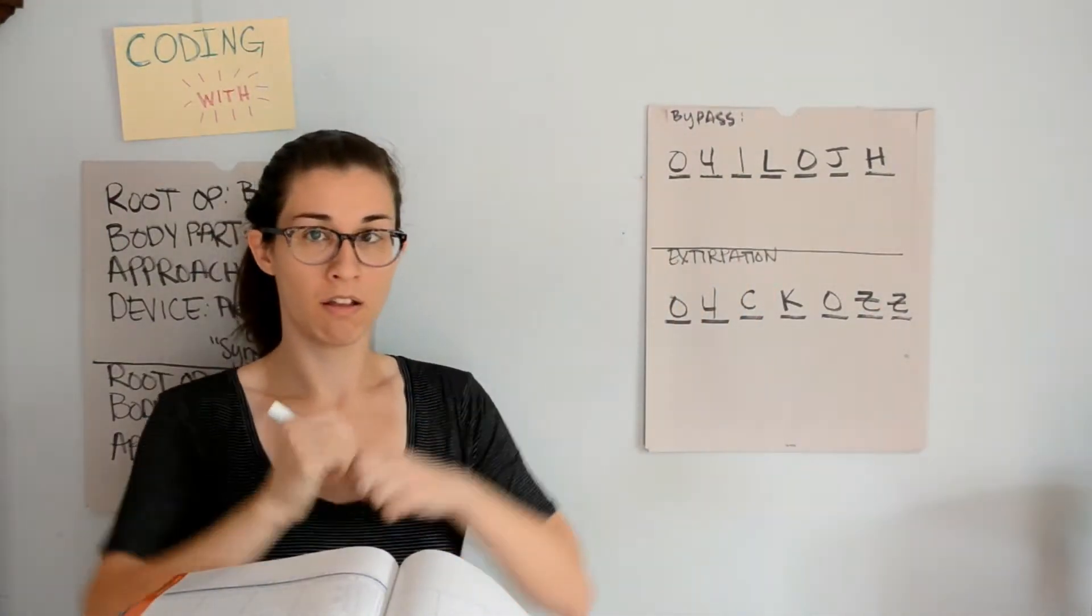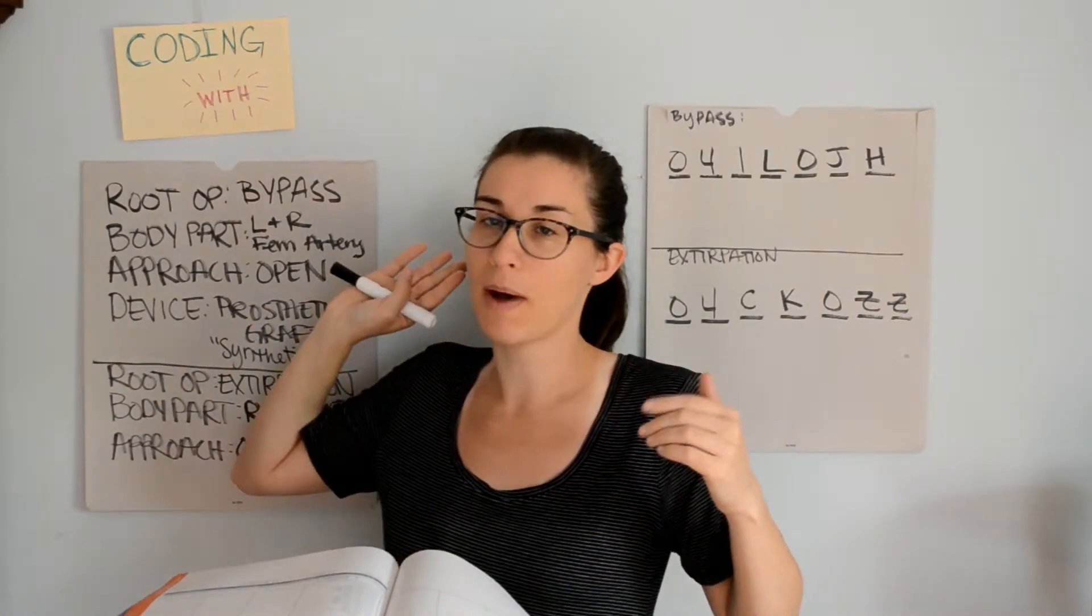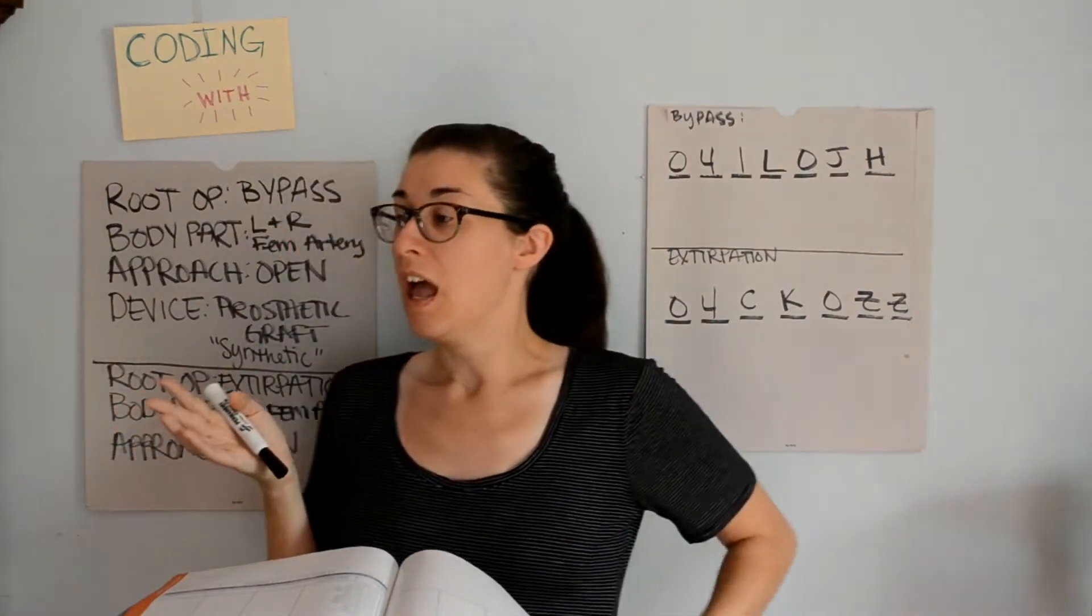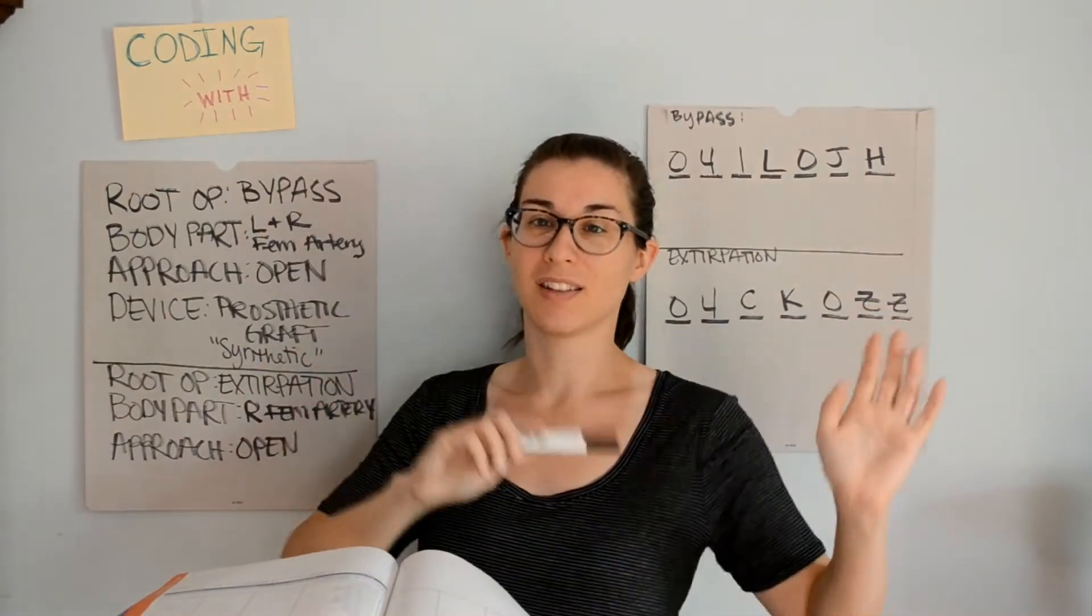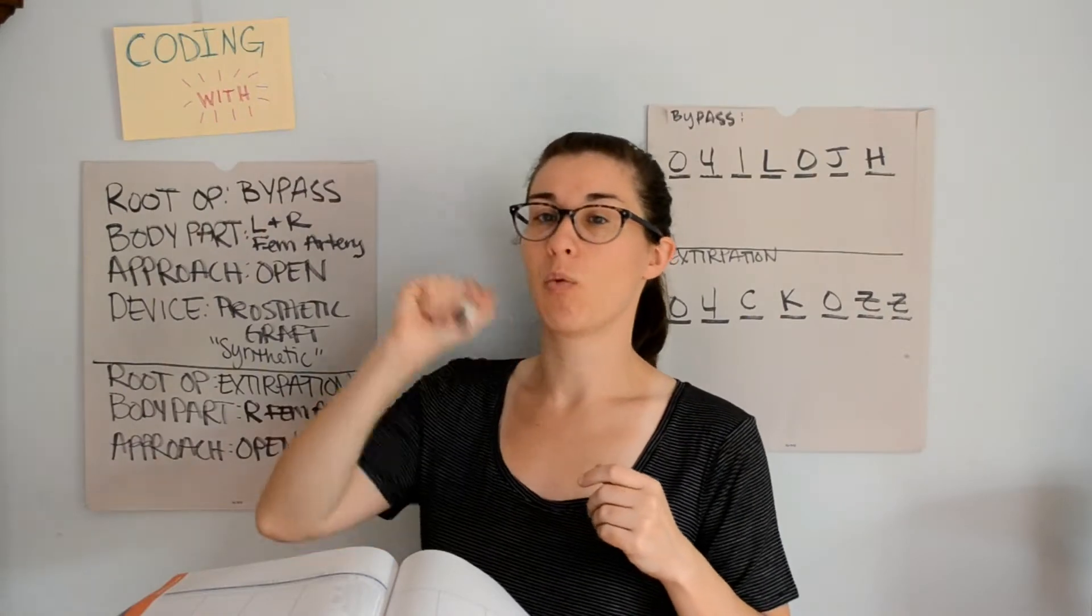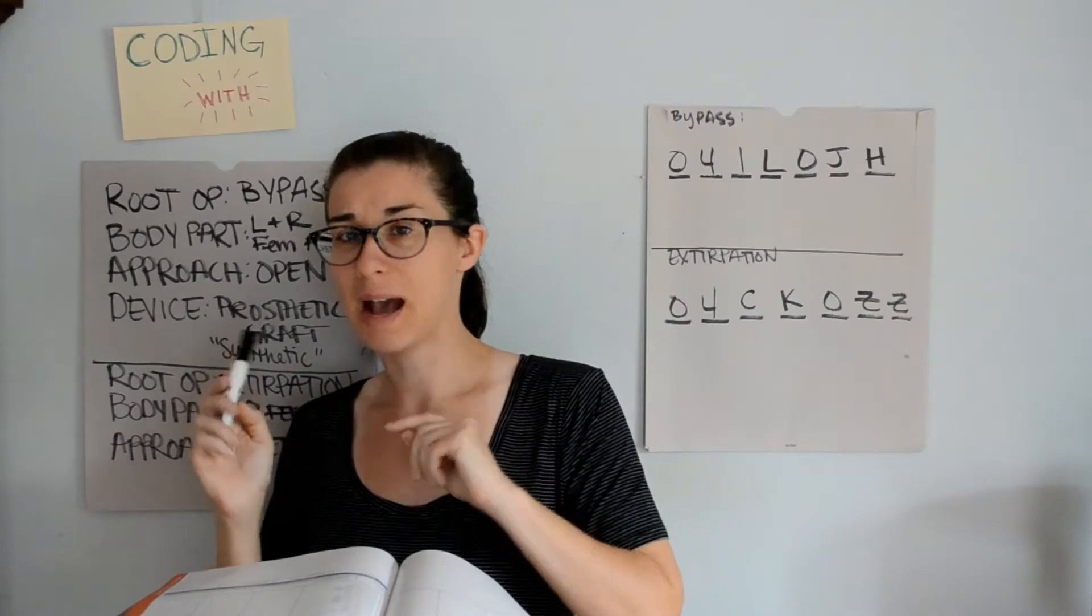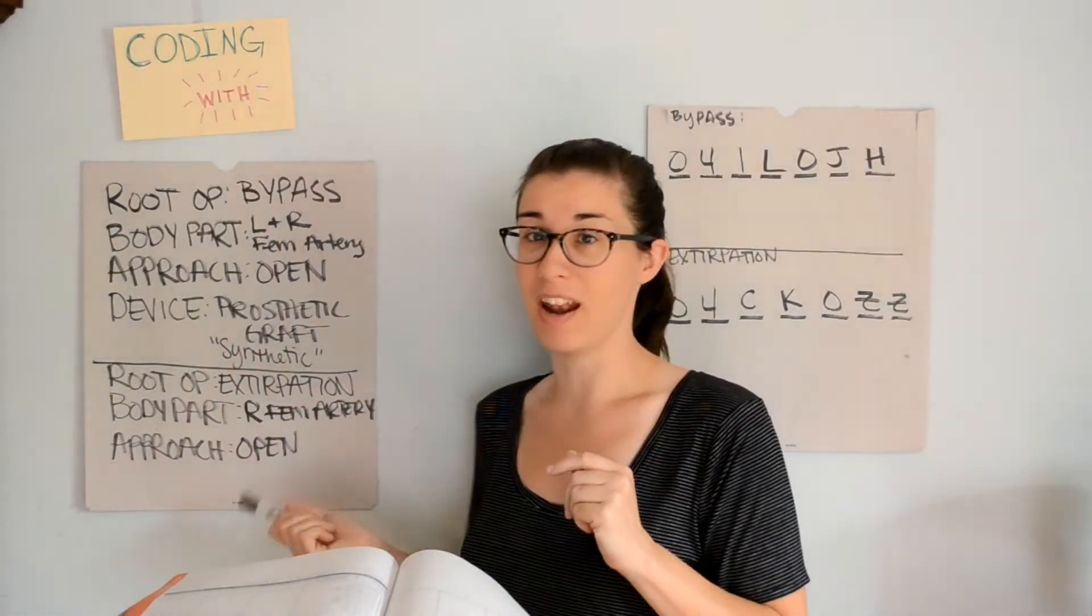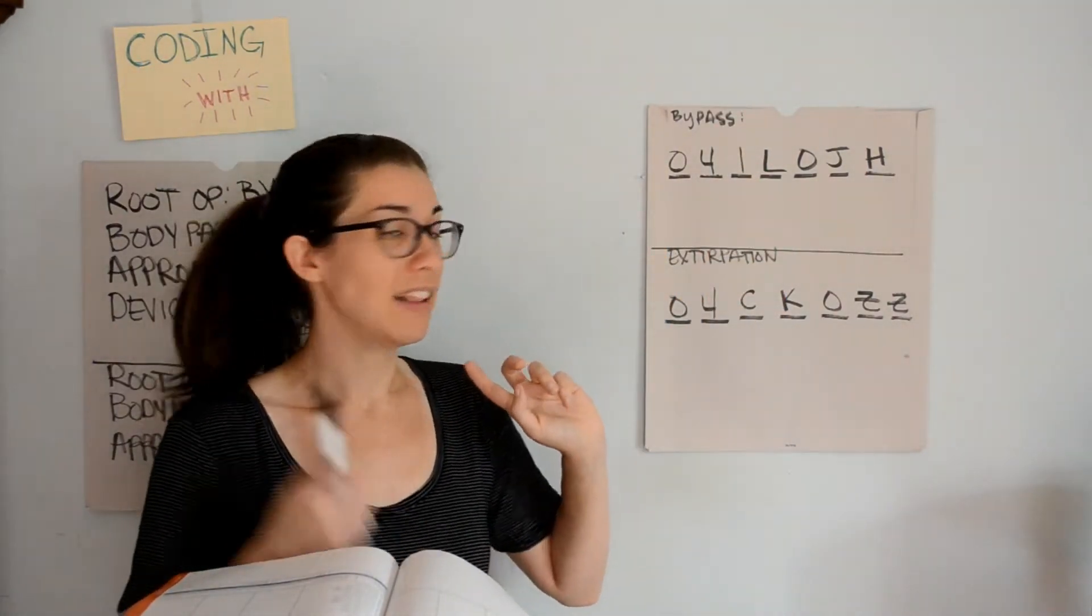And that is how we build our PCS codes for a femoral artery bypass graft with a thrombectomy. Super simple, actually. I think the hardest part is just dissecting the op report. That is why I make that a separate video because it does take a little bit more time to read through and figure out what information is integral or what needs to be captured in the PCS code. But once you have all that information, it makes finding it in the PCS code book very, very, very simple. And that's how we do it.